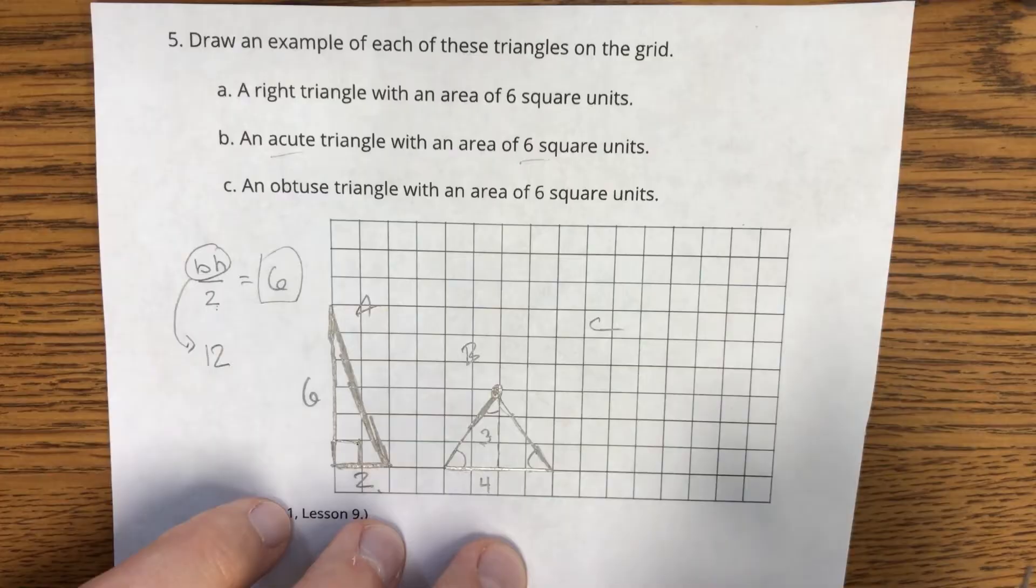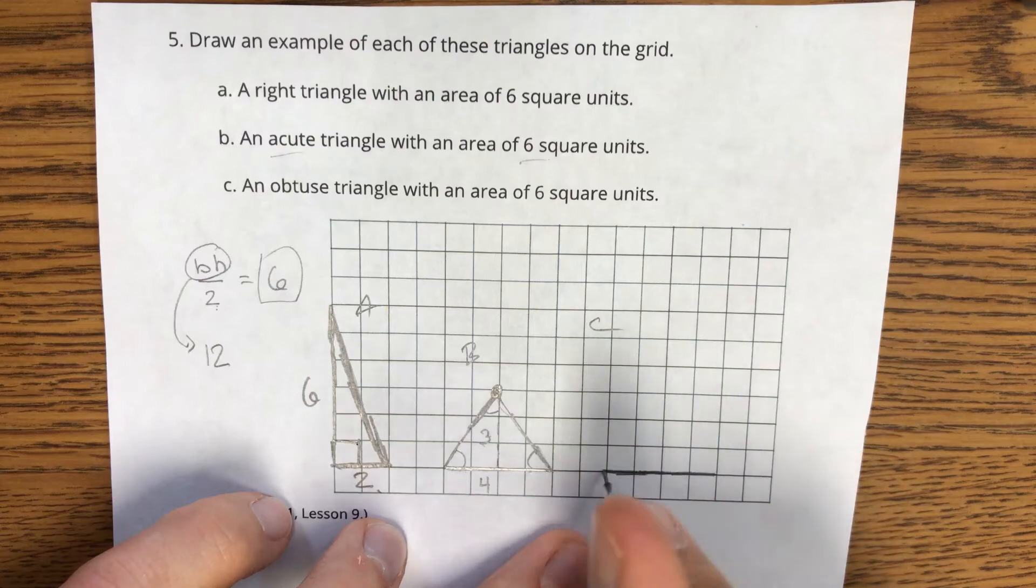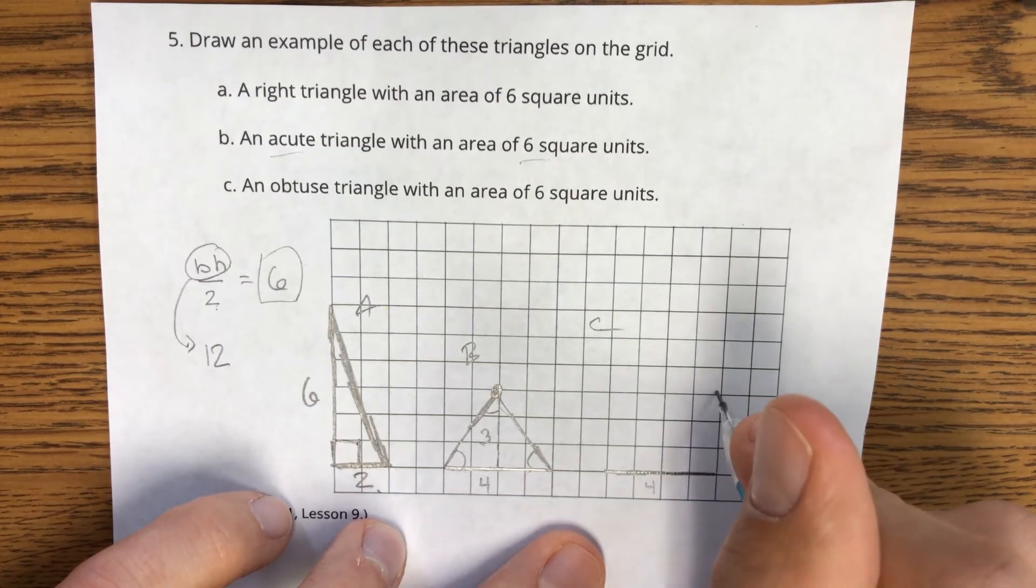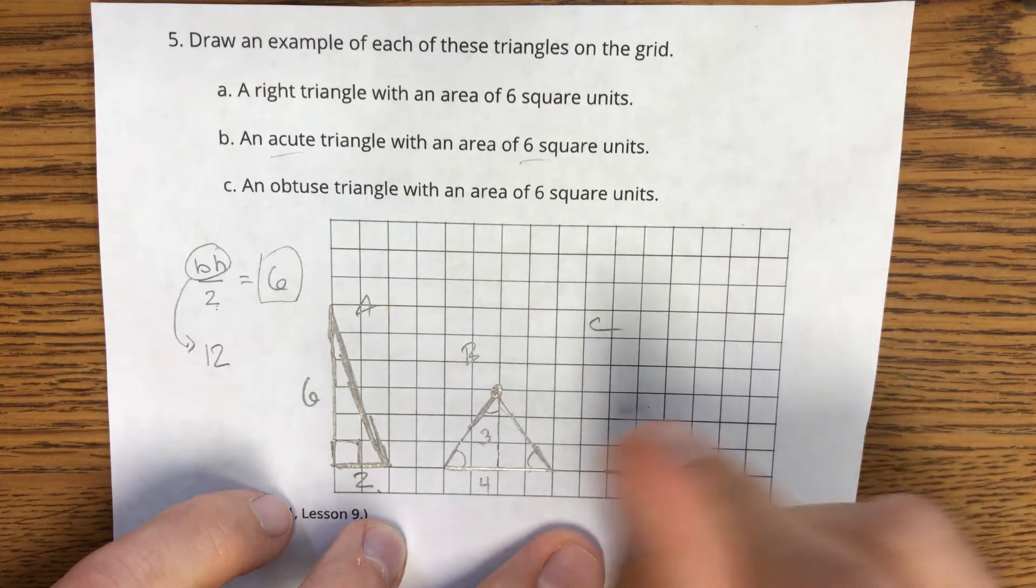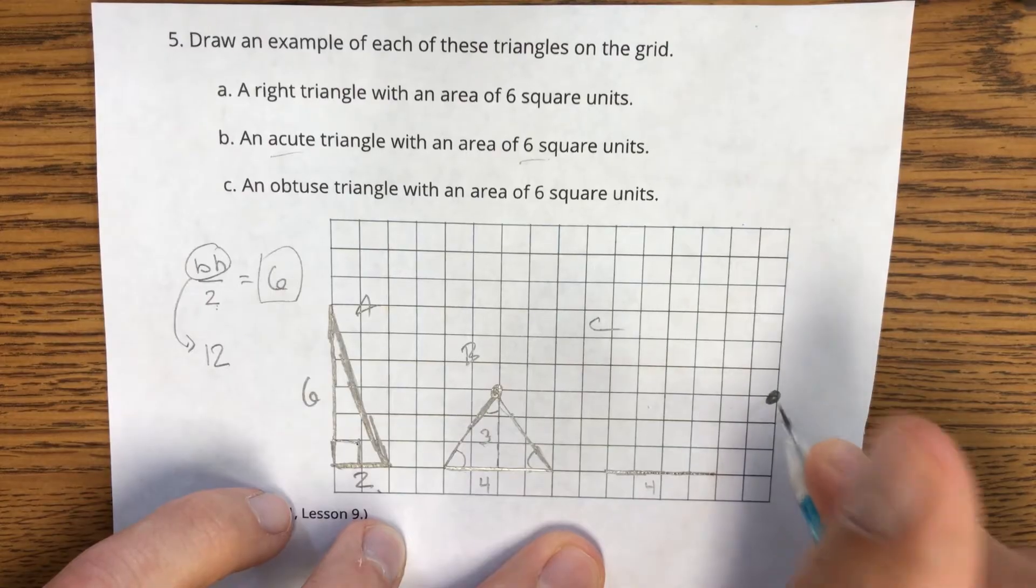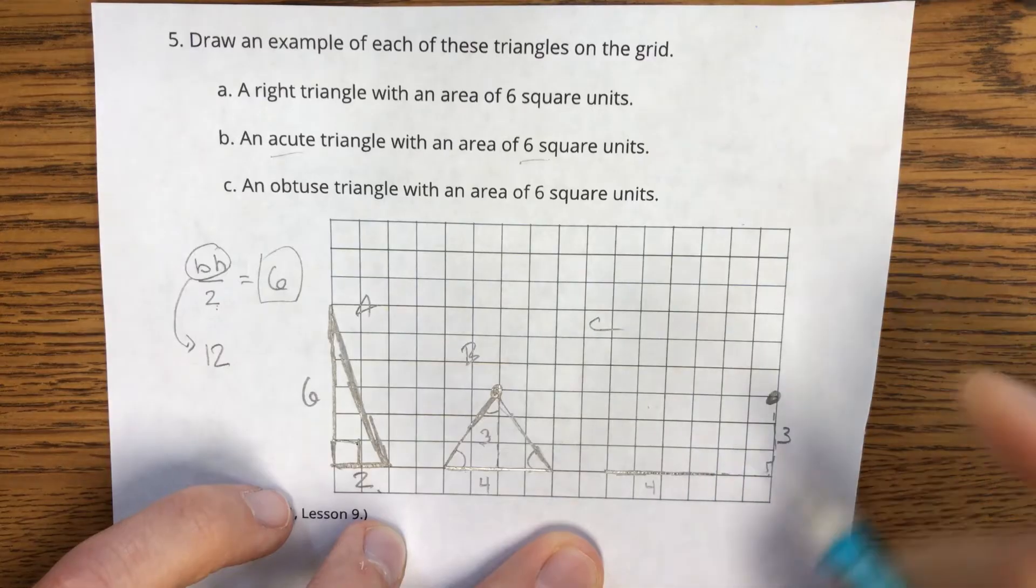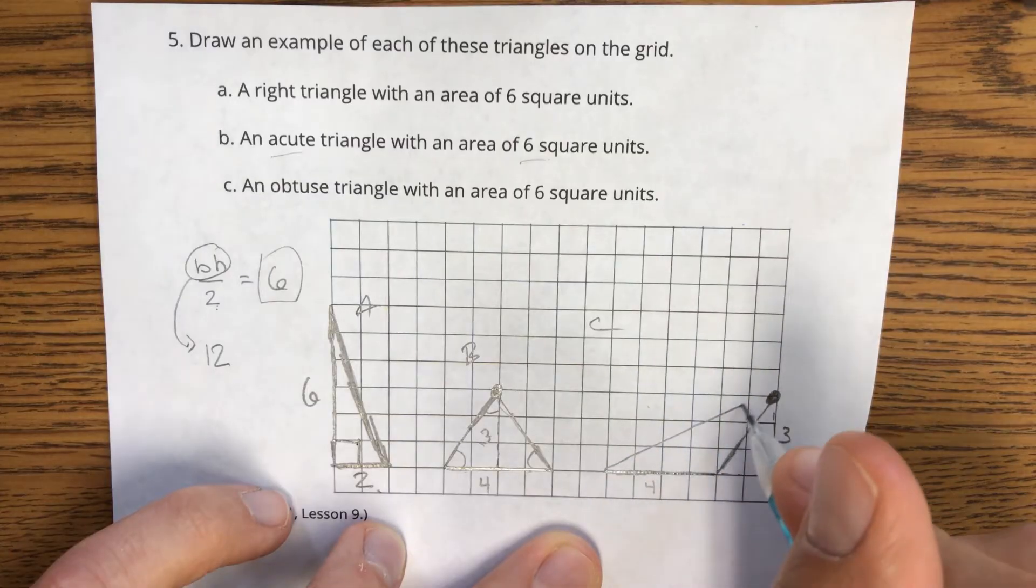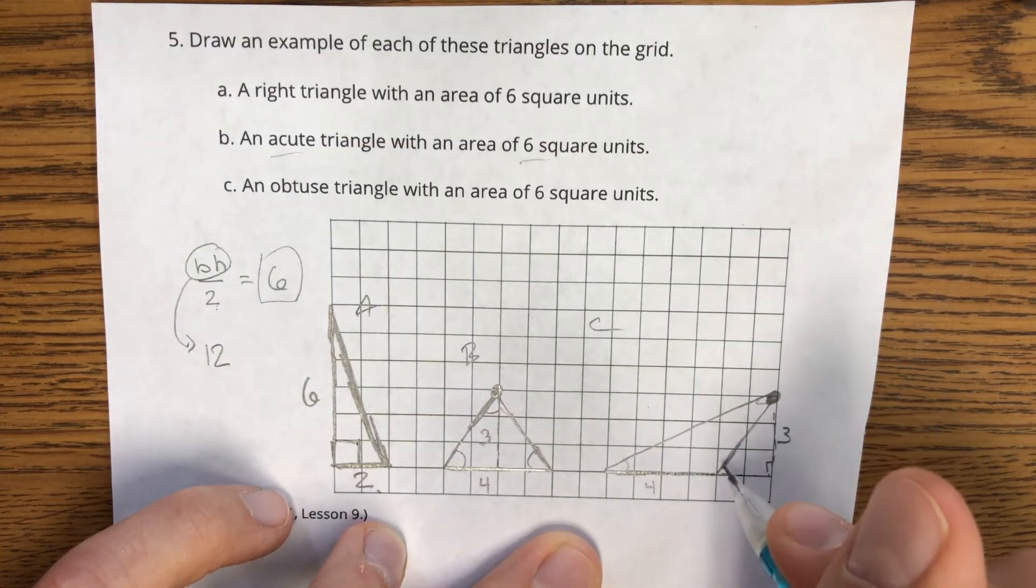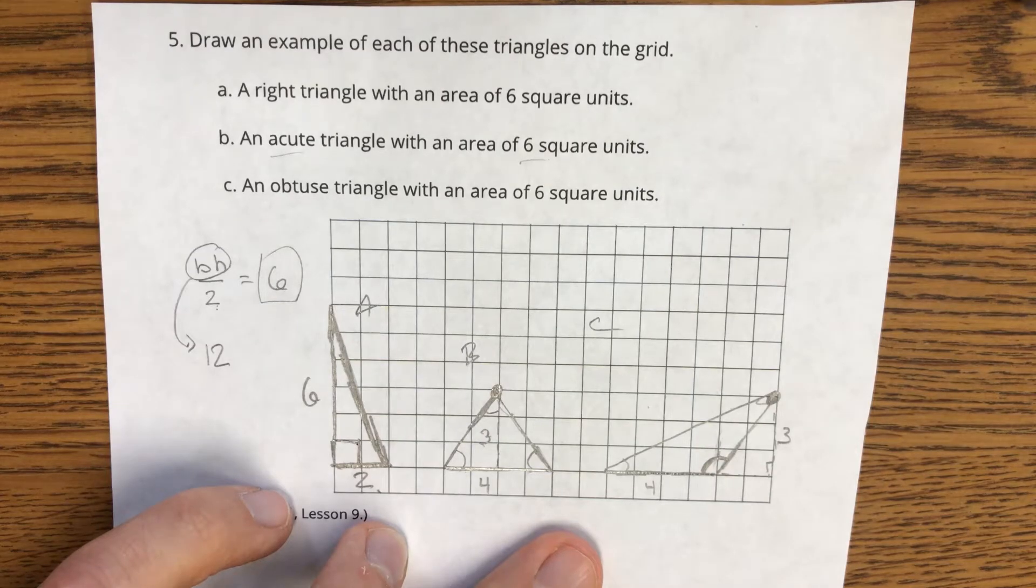An obtuse triangle, so an angle bigger than 90 degrees. Well, if I still have this base of four, but instead of coming straight up for a right triangle or in to close the angle, what if I come out same height of three? But this time I connect that. That's acute, that's acute, but this one here, this would be 90 coming straight up here. This one's definitely bigger than 90 degrees. So that is an example of an obtuse triangle.